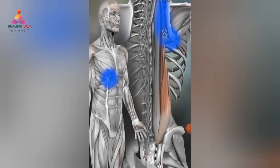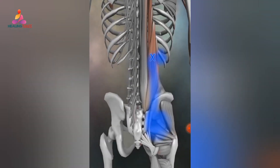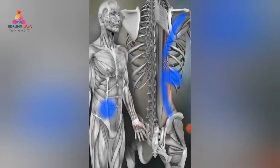Next muscle is the iliocostalis. Trigger points around T6 refer into the inferior portion of the scapula and also into the chest area, which can mimic angina. Trigger points around T11 refer into the mid back with spillover upwards into the scapula and down into the ilium, and can also refer into the abdominal region mimicking visceral pain. Trigger points around L1 refer deep into the mid buttock. Trigger points in this muscle, along with the longissimus and multifidus, are often a major factor in back pain.